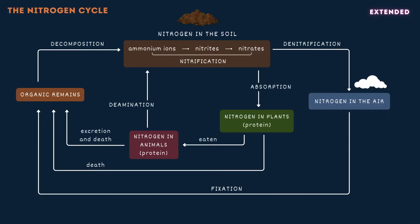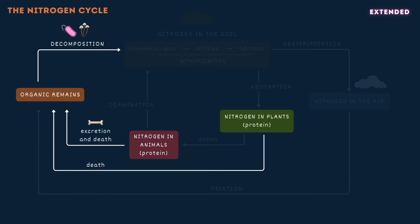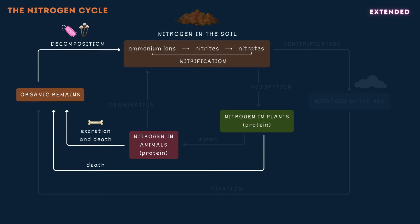The nitrogen cycle is the natural process through which nitrogen moves between the atmosphere, plants, animals and the environment. When plants and animals die, their proteins are broken down by bacteria and fungi during decomposition. This breakdown releases ammonium ions containing nitrogen into the soil. Ammonium ions are converted into nitrite ions and then into nitrate ions, which are more easily absorbed by plants. This process is called nitrification and is carried out by specific groups of nitrifying bacteria.